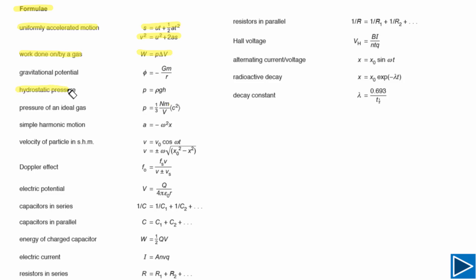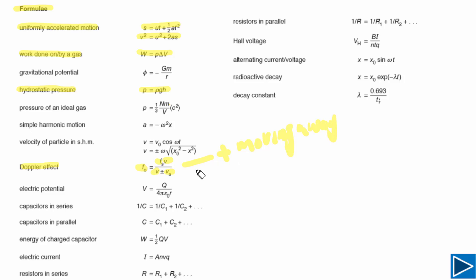The next formula you need is hydrostatic pressure: P = ρgh, where ρ is the density of the fluid. You also need the Doppler effect formula, which applies when the source is moving and the observer is at rest. Use the positive sign when the source is moving away, and the negative sign when the source is approaching the observer.